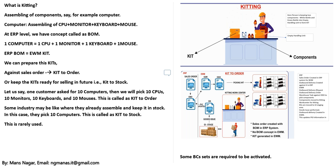For example, preparing the kit: one customer asks for 10 computers. Warehouse workers will pick 10 CPUs, 10 monitors, 10 keyboards, and 10 mice. When we put this in a box — one box per computer meaning one CPU, one mouse, one keyboard, one monitor — we call this kit A, or one kit, or kit to order.